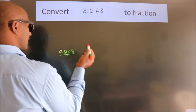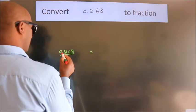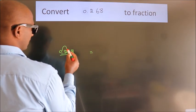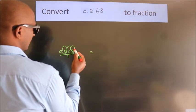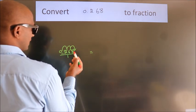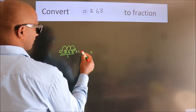To convert this to fraction, for that we have to move this decimal after 1, 2, 3 numbers. To move this decimal after 3 numbers, for that we have to multiply it with 1000.